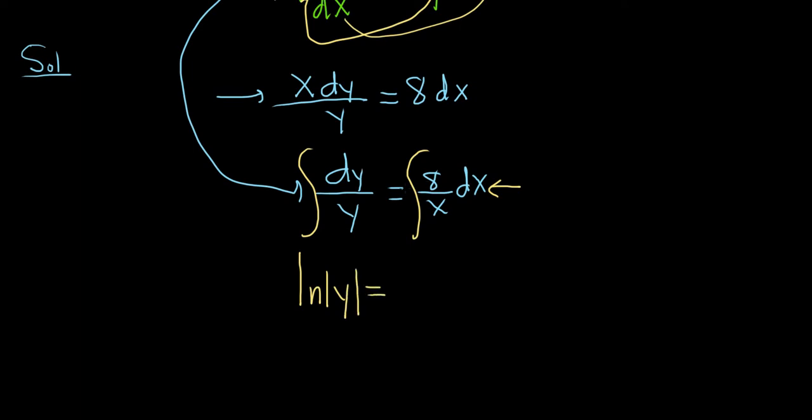And that's equal to, you can pull out the 8 or just let it hang out. That will give you 8 natural log absolute value of x plus our arbitrary constant of integration.